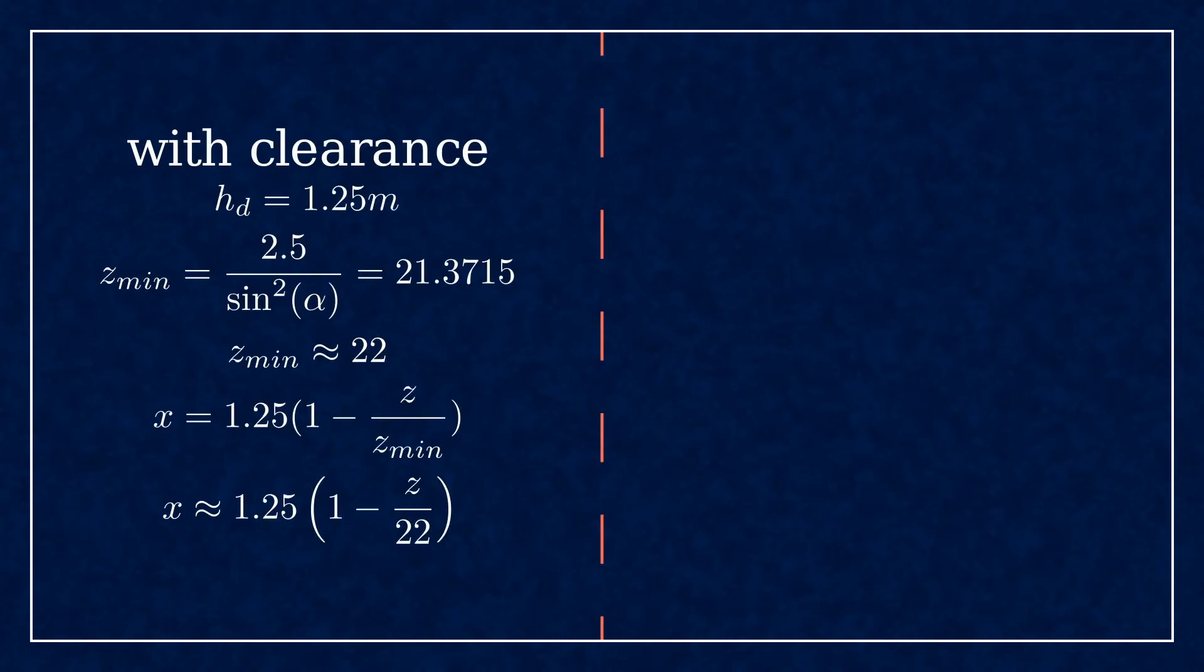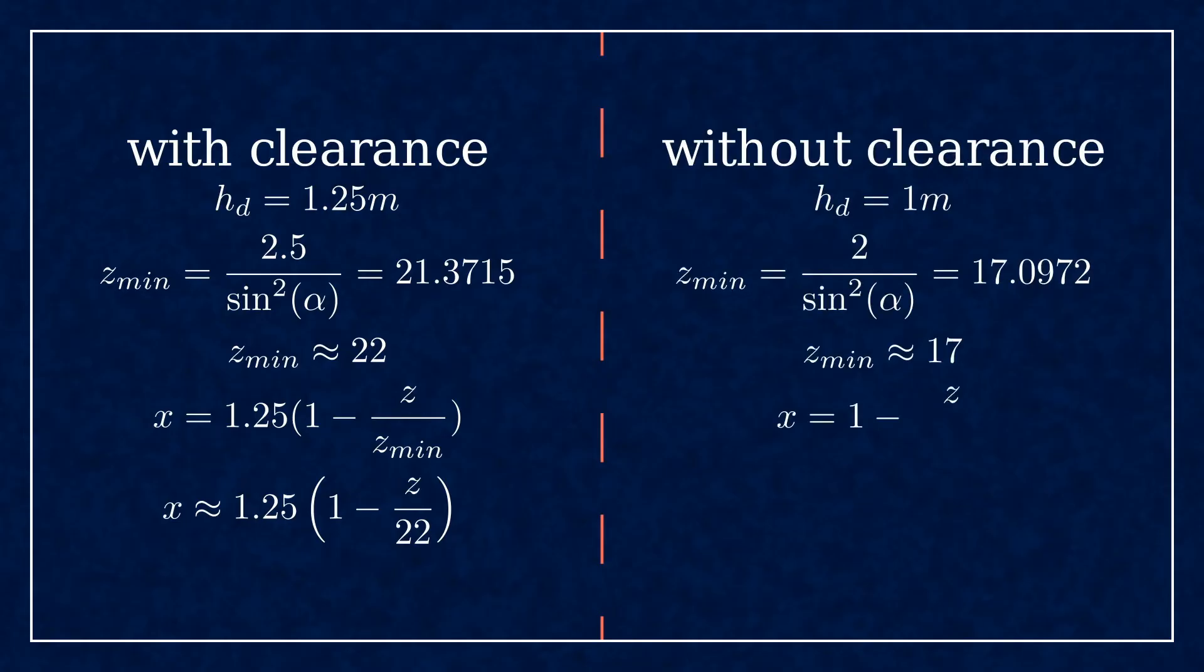Before we move on, I need to confess something. I'm not showing you the same results as your textbooks, and I'm probably wrong. The source of the issue is the clearance. I did all my calculations, assuming the dedendum coefficient is 1.25 times the module. Following this precisely leads to the values I've shown.